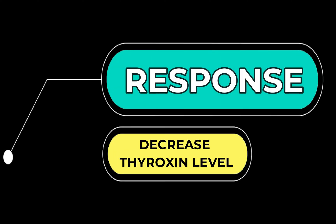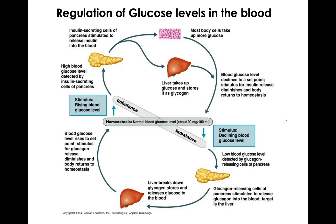Negative feedback mechanisms also control blood glucose levels. The concentration of glucose must be carefully regulated at all times in order for it to stay within the normal glucose range. Too little glucose can leave one feeling extremely weak and dizzy. Sometimes there is an imbalance — a person may experience low or high blood glucose — and the negative feedback mechanism controls this, making sure it always stays within a normal range.